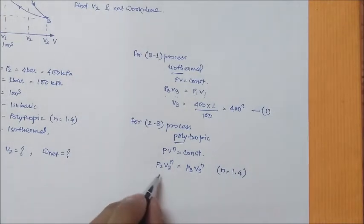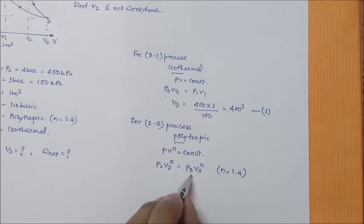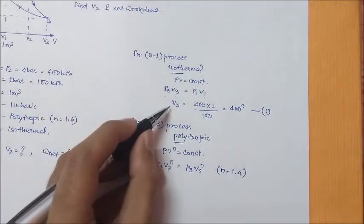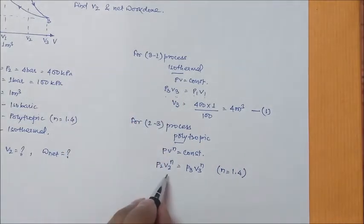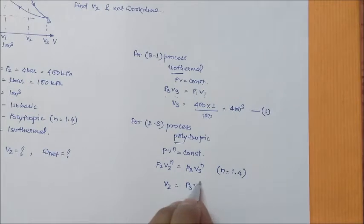Now, see P2 we know the value. V2 is unknown. P3, yes we know the value is given. V3 we have just calculated. So, the only unknown now is V2.